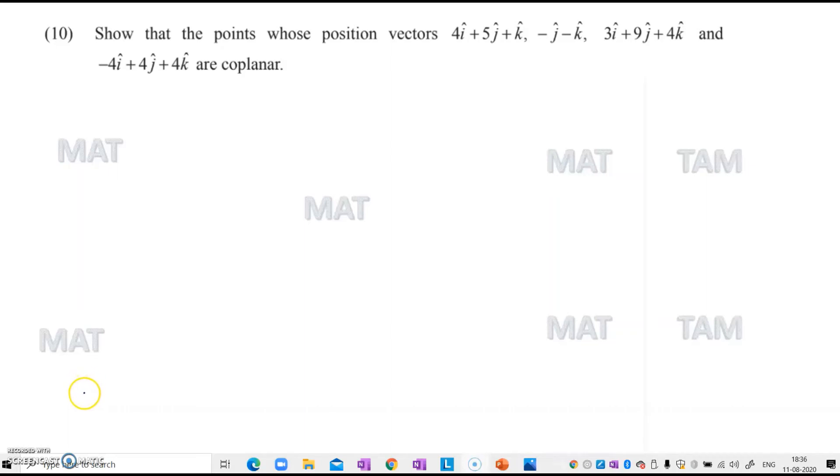In this video, we will do further problems from exercise 8.2. Question number 10 says, show that the points whose position vectors are, there are four vectors given here, are coplanar.